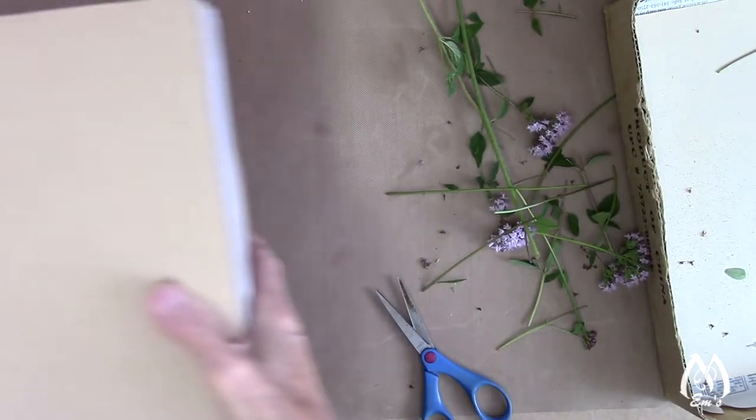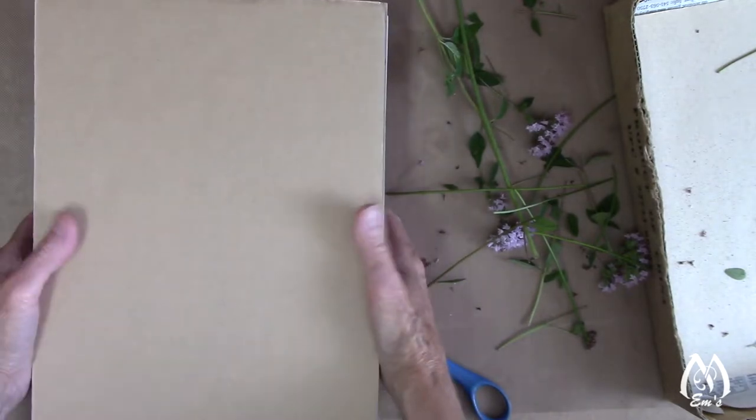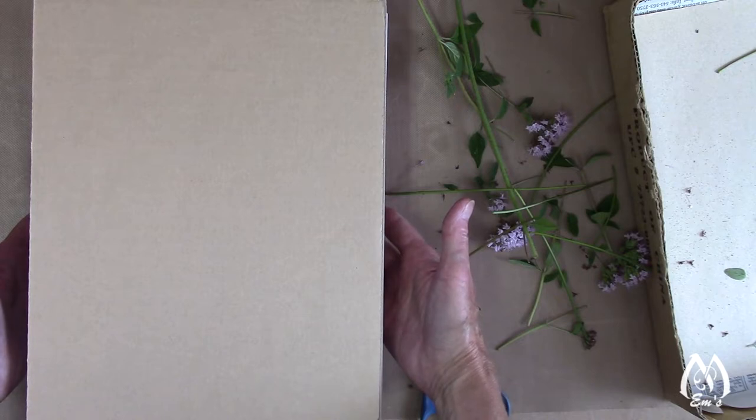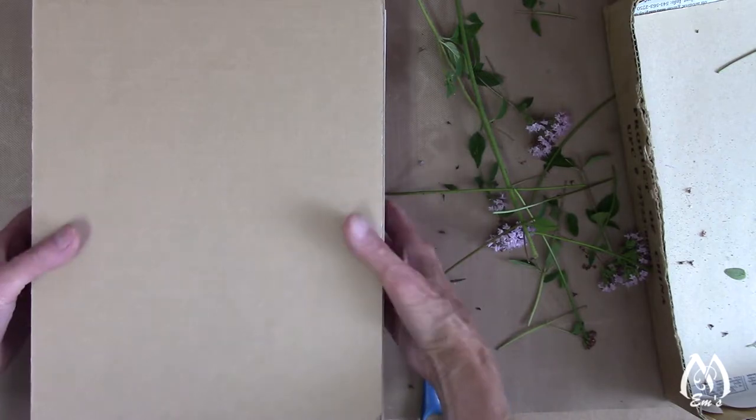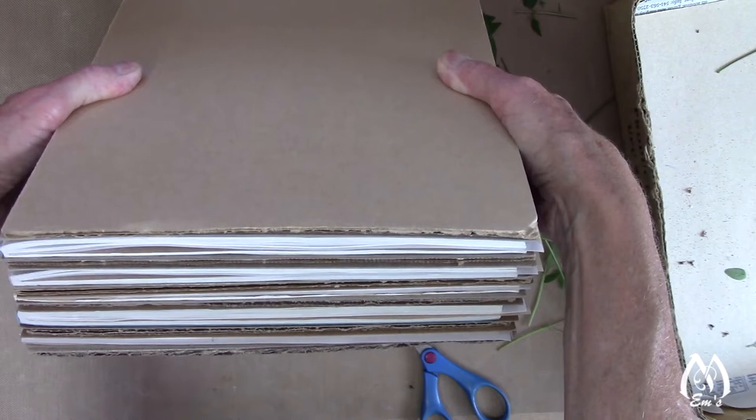Now that I've pressed those coreopsis that I just showed you, I want to get pressure on them as soon as possible. So what I've done so far, this is the Queen Anne's and some of those oregano. And then the coreopsis that I've done so far, I'm going to go ahead and get these under pressure.